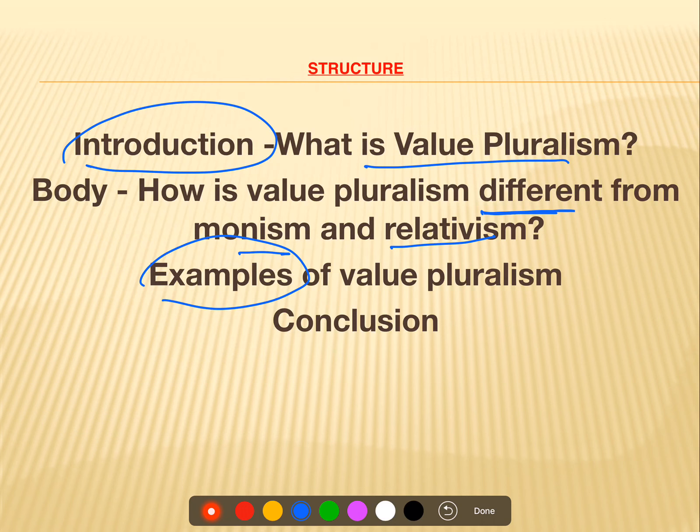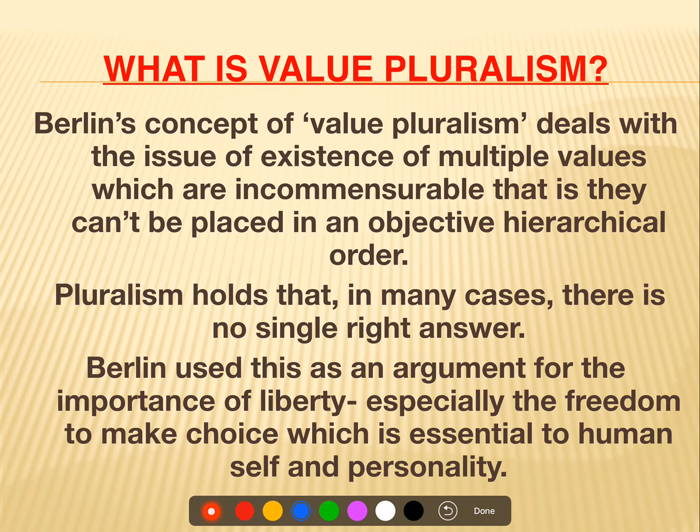So let's start. What is value pluralism according to Berlin? It deals with the issue of the existence of multiple values — many values exist — and these are important, universal, and fundamental, but at the same time they are in a conflicting mode. That is what value pluralism is.